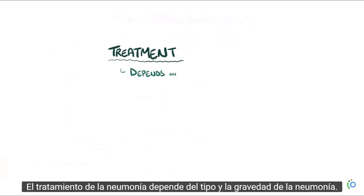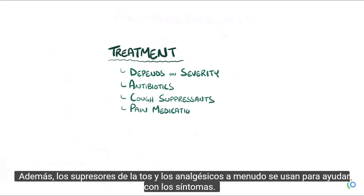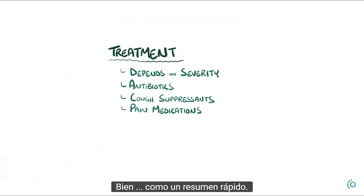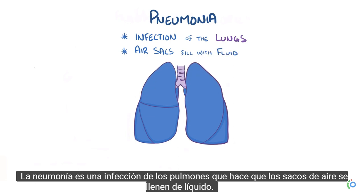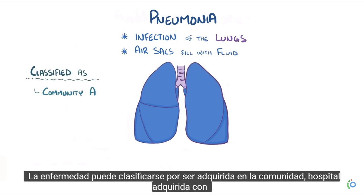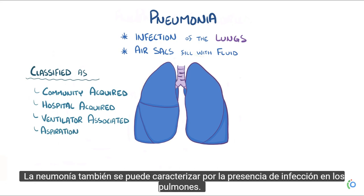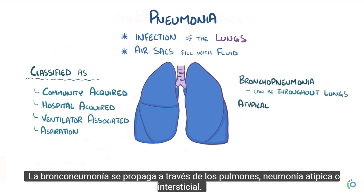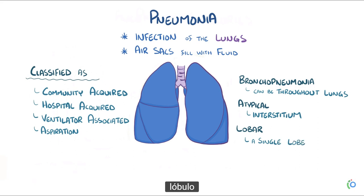The treatment of pneumonia depends on the type and severity. Since bacteria are the most likely cause, antibiotics are often prescribed. Cough suppressants and pain medications are used to help with symptoms. In summary, pneumonia is an infection of the lungs resulting in air sacs filled with fluid. It can be classified as community-acquired, hospital-acquired (including ventilator-associated), or aspiration pneumonia, and by location as bronchopneumonia, atypical/interstitial pneumonia, or lobar pneumonia.